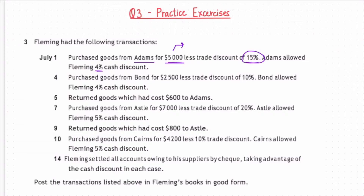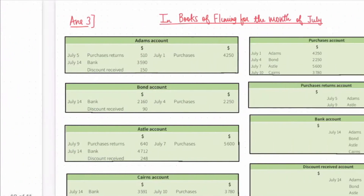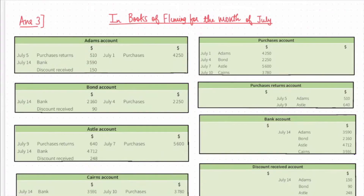The purchase cost here will be $5,000 less 15% of $5,000, which will be $4,250. This will be the purchase cost, and the entry will be Purchase account debit to Adams. In the Purchase account, Adams account will be debited, and in Adams account, the Purchase account will be credited — the amount being $4,250.